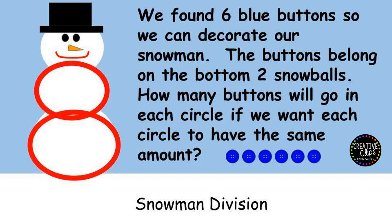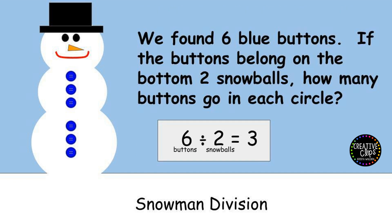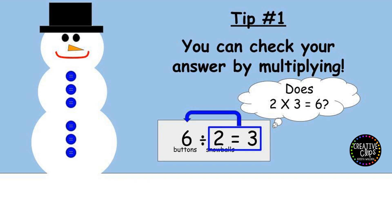Let's see what it looks like as we're sorting the buttons into equal groups: one button in the middle, one on the bottom; two in the middle, two on the bottom; three in the middle, and three on the bottom. We used all six buttons. So six buttons divided by two snowballs equals three buttons. Tip number one: you can check your answer by multiplying. Look at the last two numbers in the division problem. Does two times three equal six? Yes, it does. Since two times three equals six, your answer is correct.